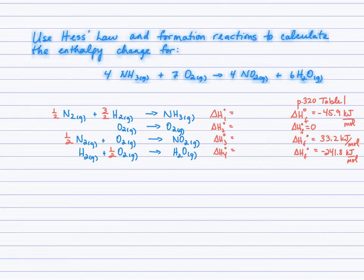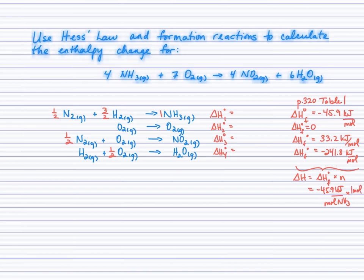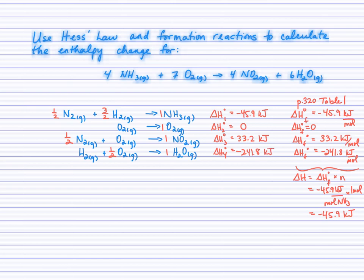Recall that we calculate enthalpy change by multiplying the molar enthalpy by n, the coefficient in the balanced equation. For ammonia with a coefficient of 1, ΔH₁ = negative 45.9 kilojoules. Following the same process, ΔH₂ = 0 for O₂, ΔH₃ = 33.2 kilojoules for NO₂, and ΔH₄ = negative 241.8 kilojoules for H₂O gas.